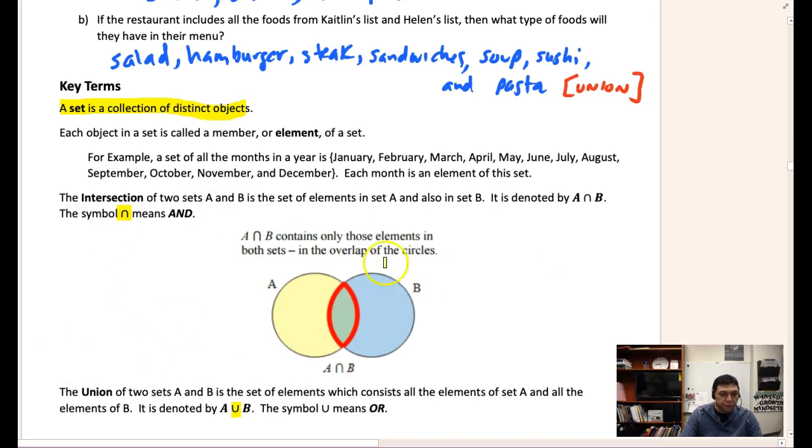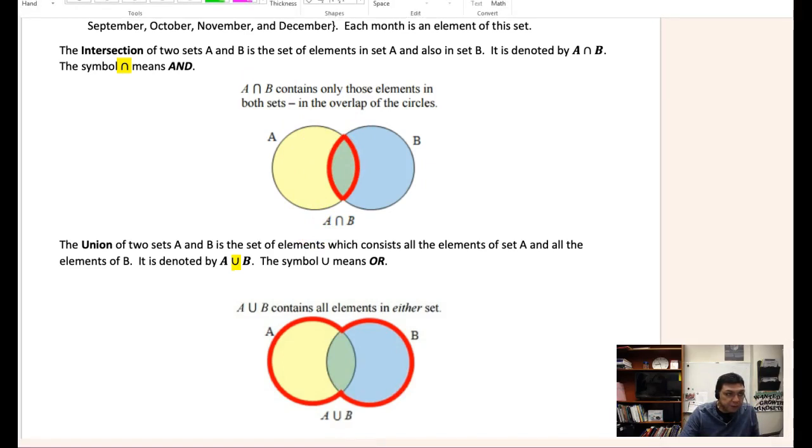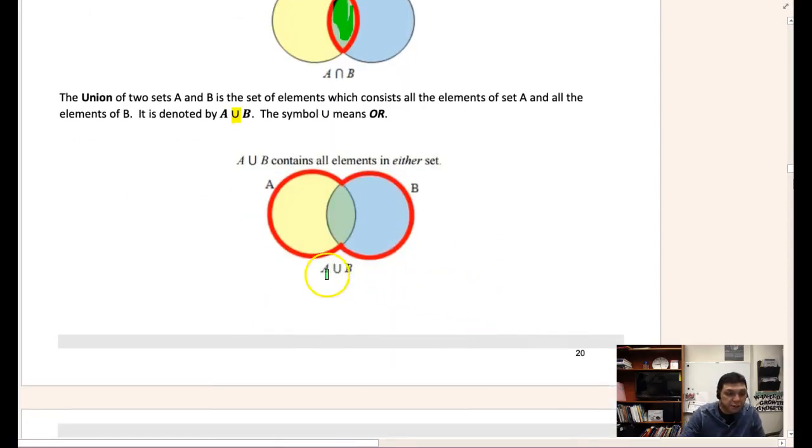You can go ahead and take a minute to read those definitions, and again you can see in a picture what is represented here. The intersection is this piece here. You can see the intersection is in this area here. The union is putting together both sets all together, and you can see the notation that we have there for intersection and union.